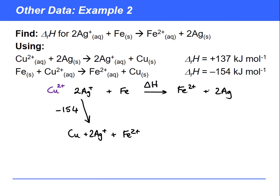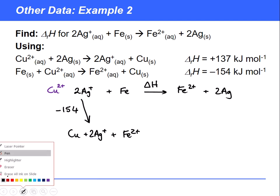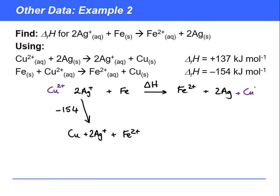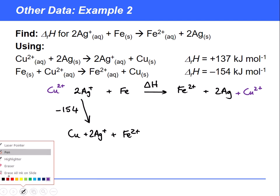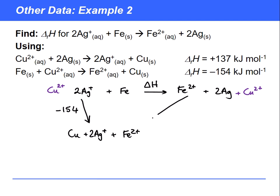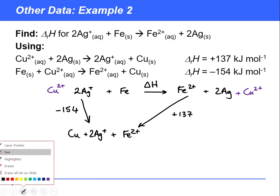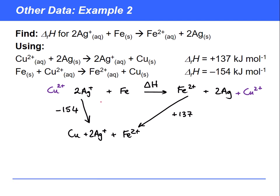Then we think: can we do anything to silver to turn it into anything further along the cycle? It turns out that if we take Cu²⁺ and react it with 2 Ag we can make 2 Ag⁺ and Cu. This time the arrow goes from here down to that point, and the enthalpy change is +137 kJ/mol (endothermic). We've now completed our cycle.